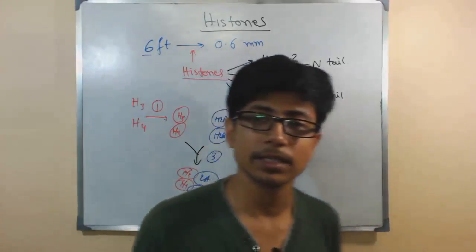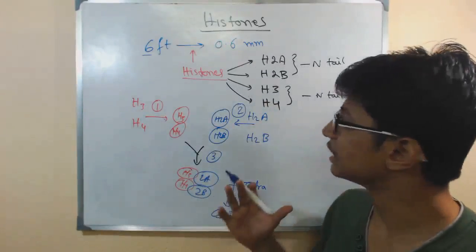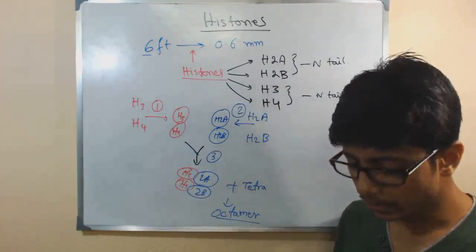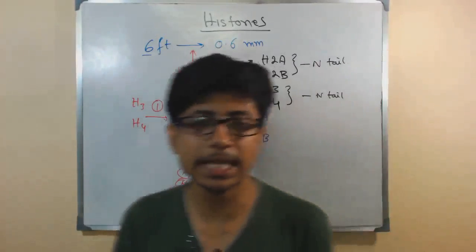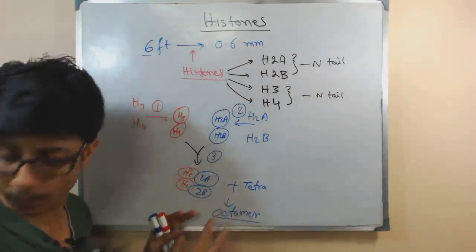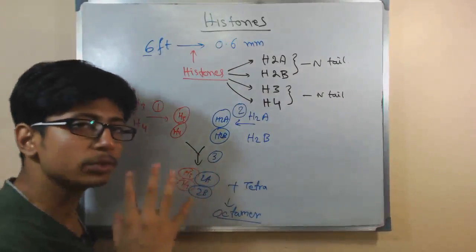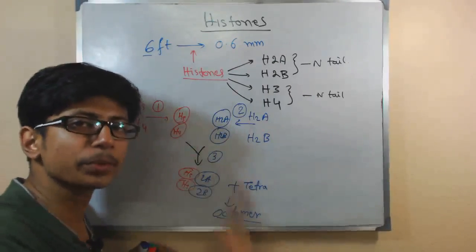This is how exactly the histones are arranged. Once they form this octamer, that's the way to form. Now we need to study how this DNA is actually wrapped there.